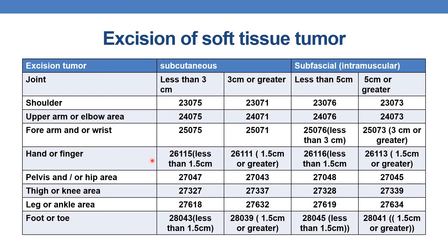Coming to hand or finger. For subcutaneous soft tissue tumor, the threshold here is 1.5 centimeters: if less than 1.5 centimeters, CPT is 26115; if 1.5 centimeters or greater, it is 26111. For excision of intramuscular soft tissue tumor of hand or finger: if less than 1.5 centimeters, CPT is 26116; if 1.5 centimeters or greater, it is 26113.